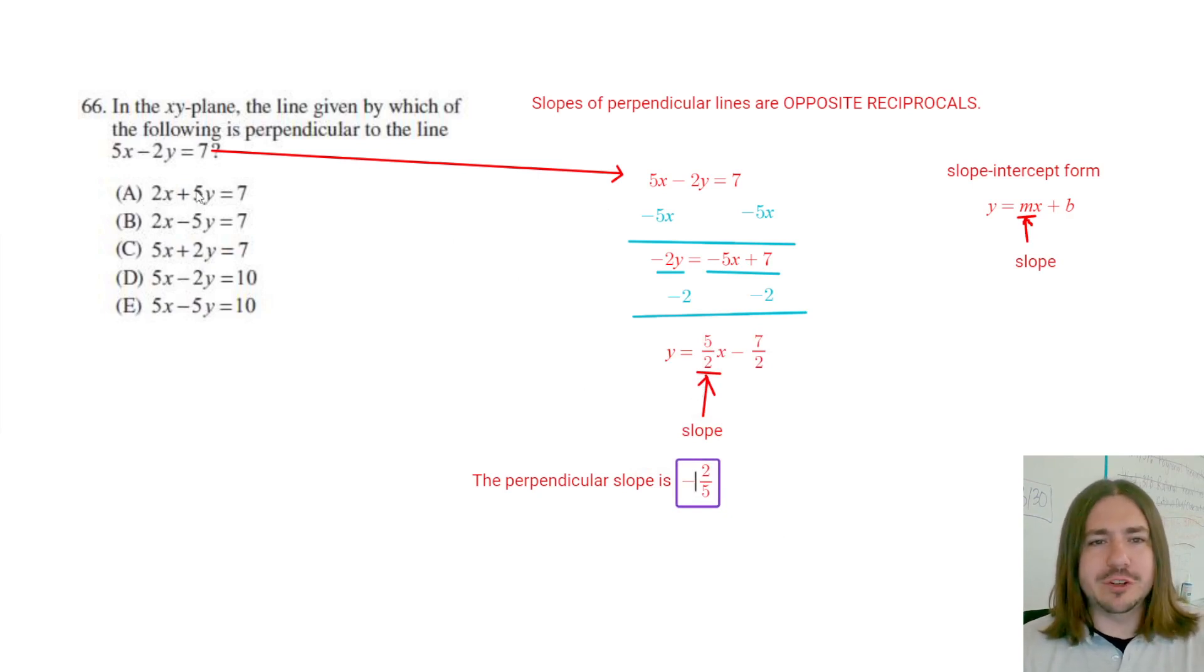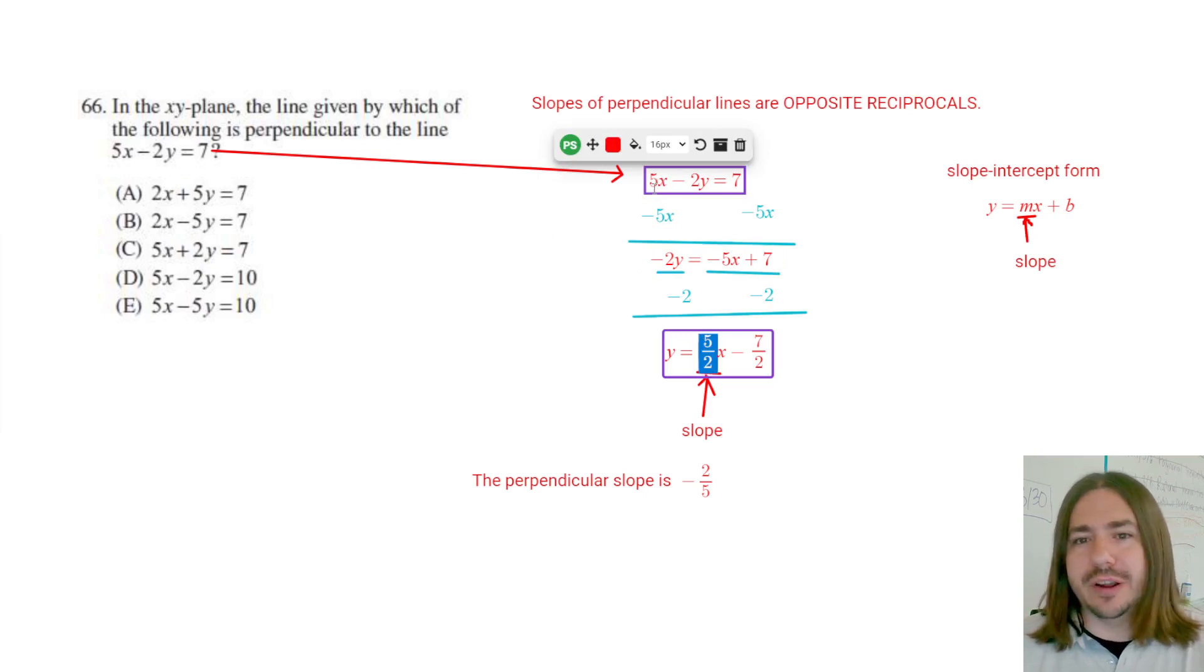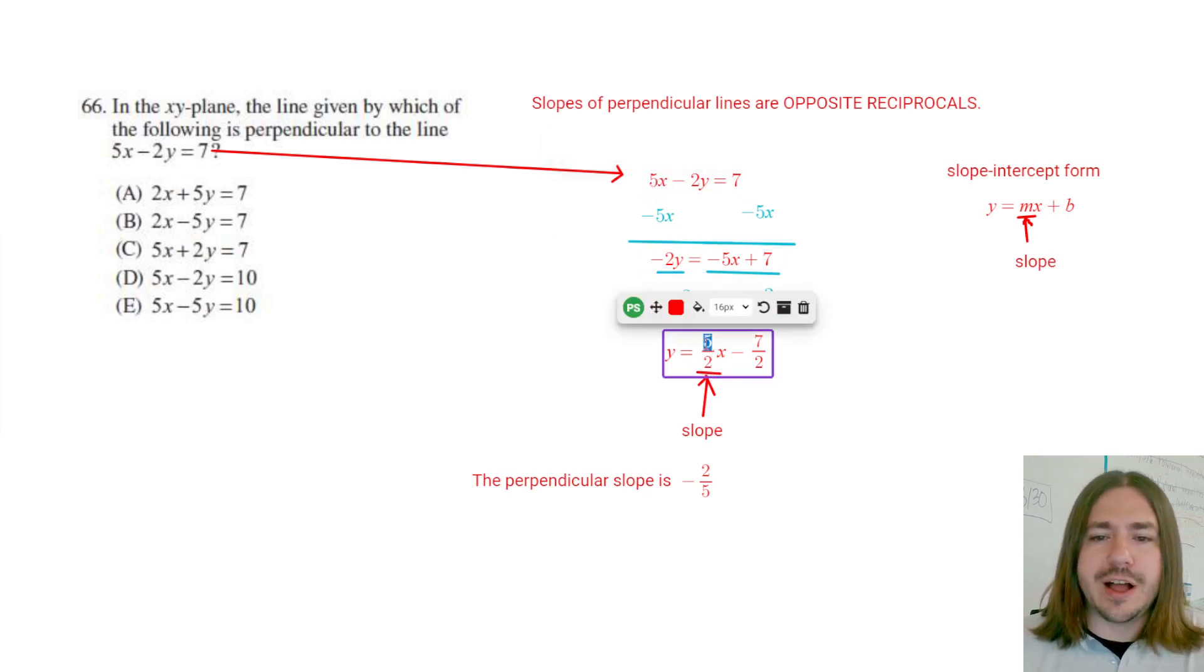But I don't want to have to go through this whole process if I can avoid it. I might have to do it five times if the answer is E. What I want to do is really focus on like, how did I get this slope? Let's really break down where that number came from if what we want to do is kind of find a shortcut here. So let's see where these numbers are coming from. The 5 came from the original coefficient of x here. And the 2 came from the original coefficient of y. It was negative, but now it's positive.